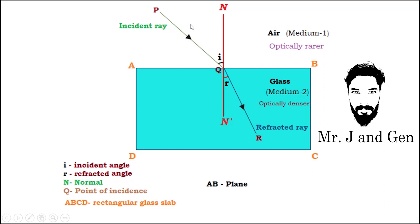Fourth term: angle of incidence. The angle between the incident ray and the normal is called the angle of incidence — or, the angle which the incident ray makes with the normal at the point of incidence. It is symbolically represented as small letter i.